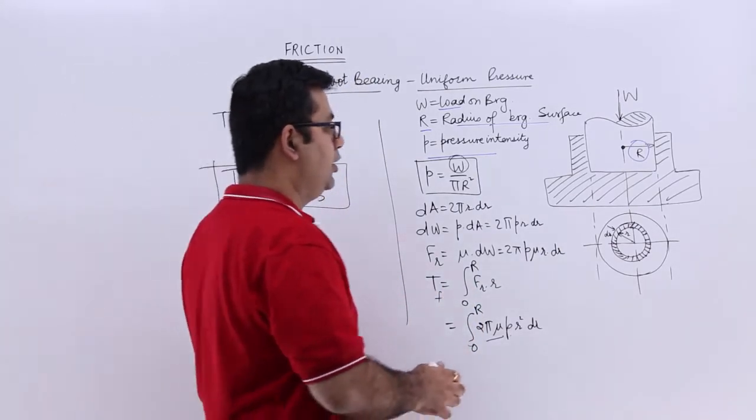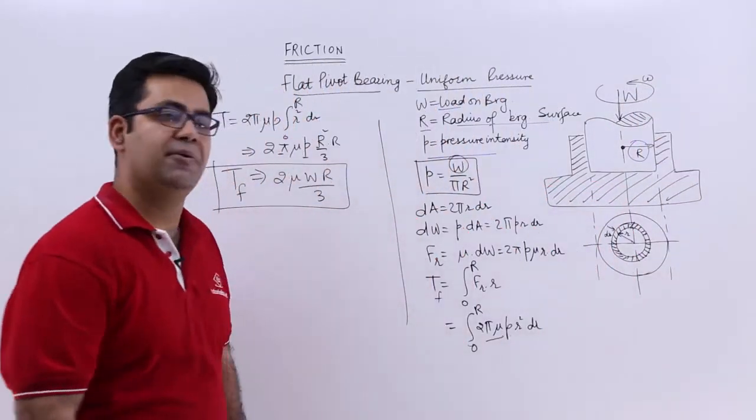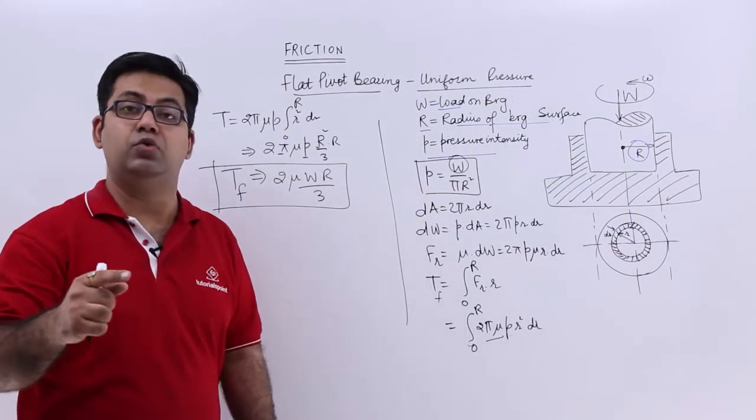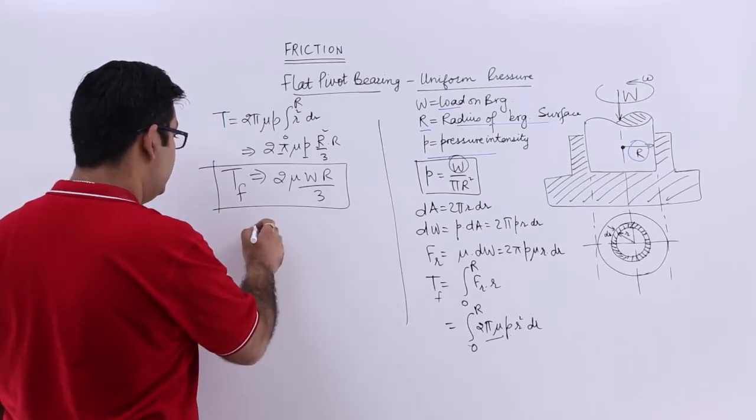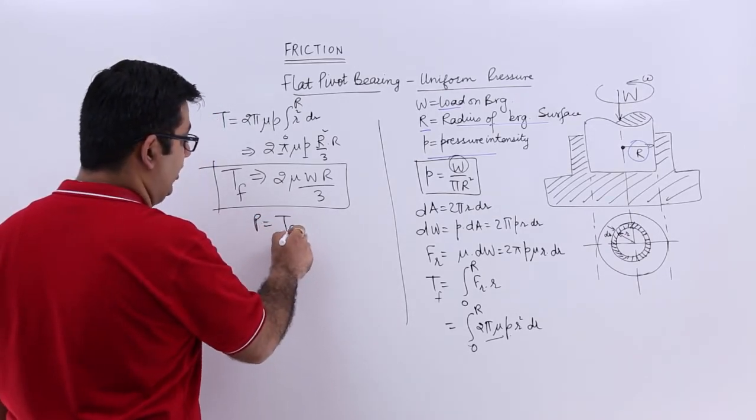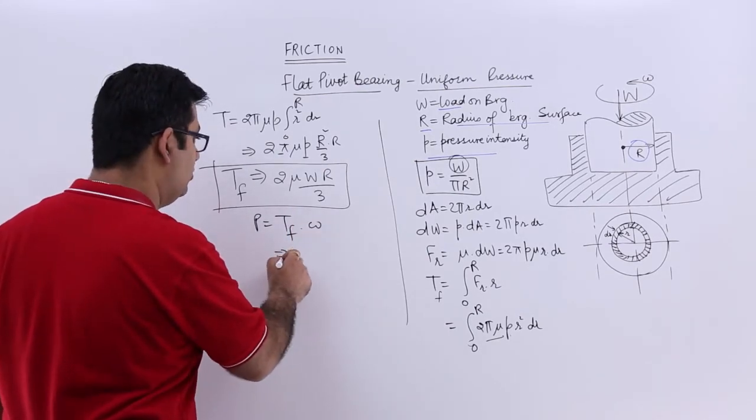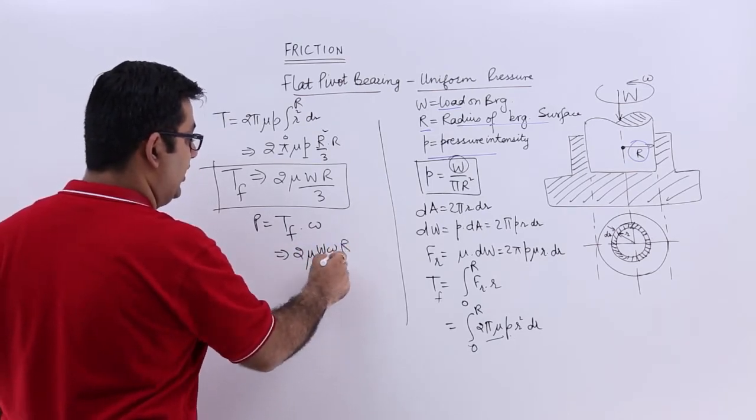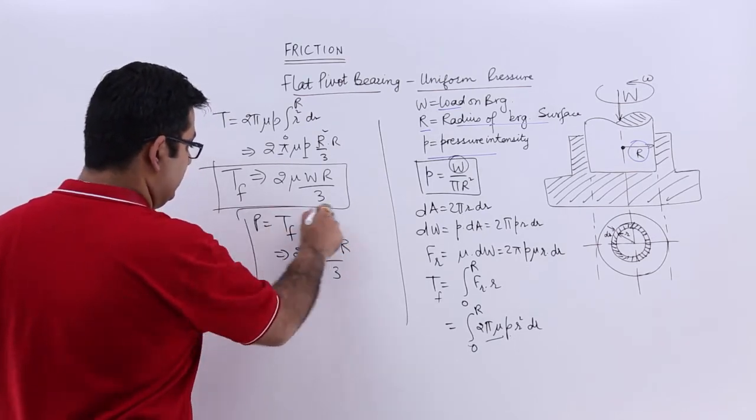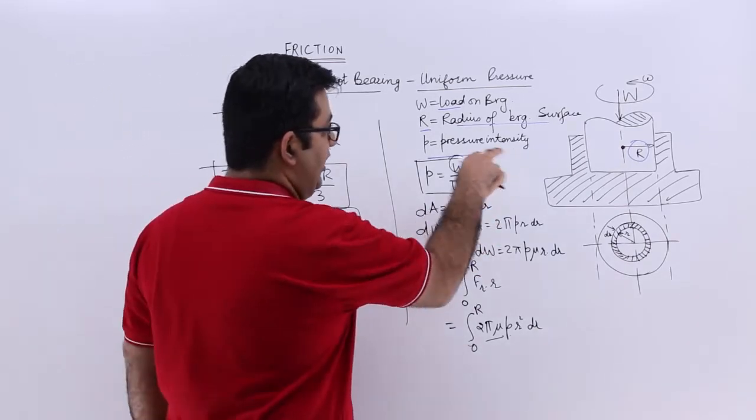So let us say this is rotating with an angular velocity omega. So the power required to overcome the torque or to overcome the friction is the torque required to overcome the friction into omega. That gives you 2 mu W omega r upon 3. So this is the power which is required to overcome the friction in a flat pivot.